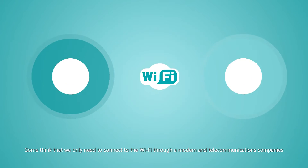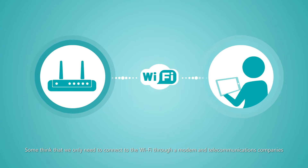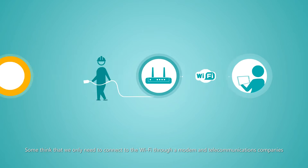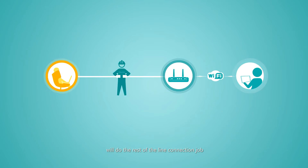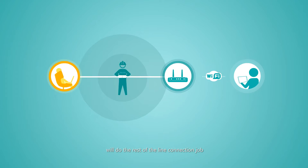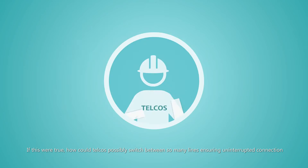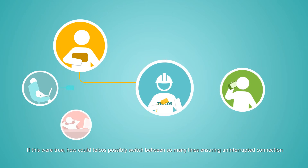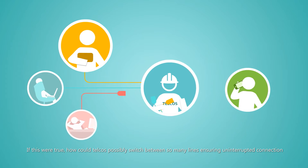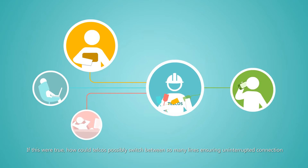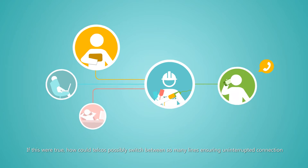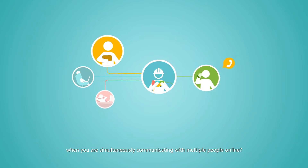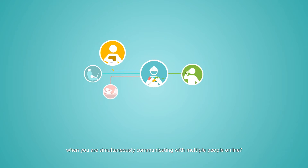Something that we only need to connect to the Wi-Fi through our modern and telecommunication companies would do the rest of the line connection job. If this were true, how would telecoms possibly switch between so many lines, ensuring uninterrupted connection, when you're simultaneously communicating with multiple people online?